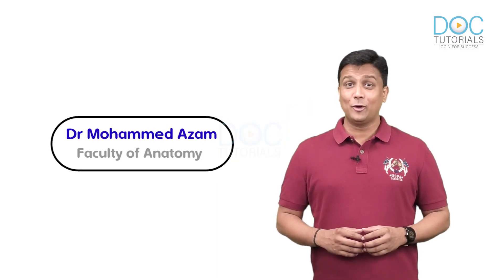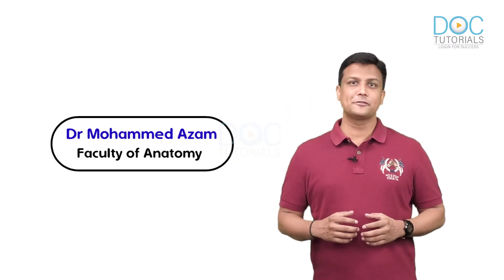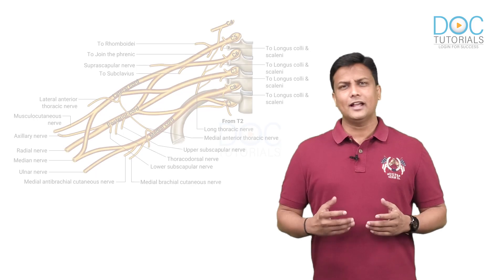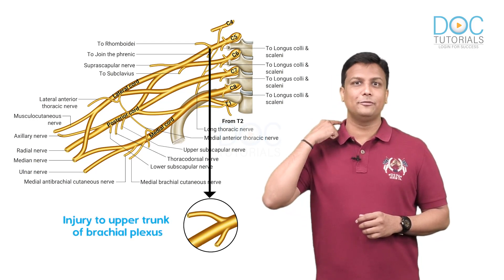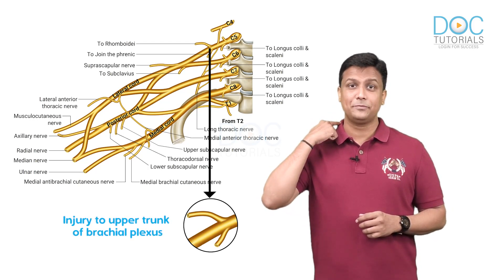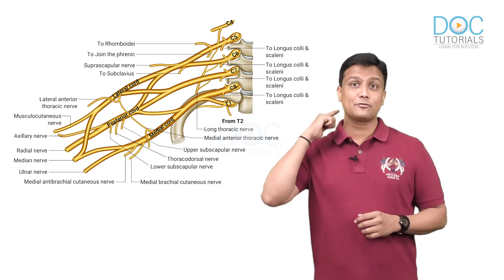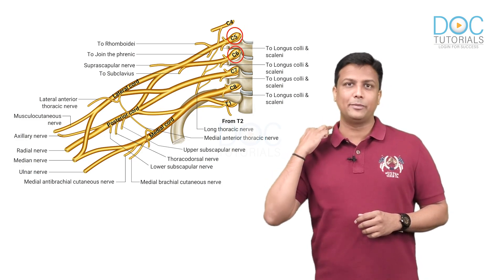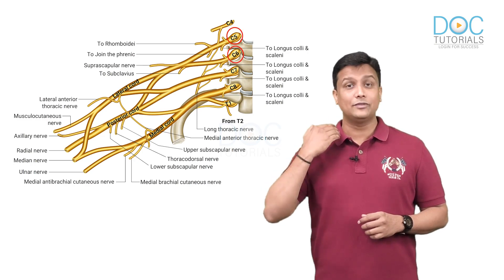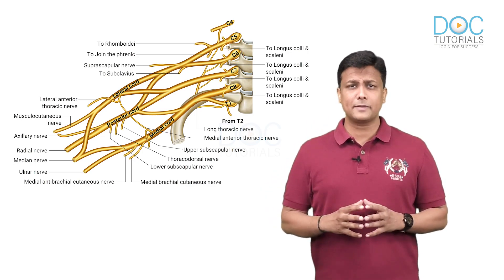Hello my dear doctors. Let us discuss the sign of Erb's Paralysis. As you all know, Erb's Paralysis occurs due to injury to the upper trunk of the brachial plexus. The upper trunk of the brachial plexus is formed from C5 and C6, so C5 and C6 combine to form the upper trunk, and if that is injured, it is Erb's Paralysis.